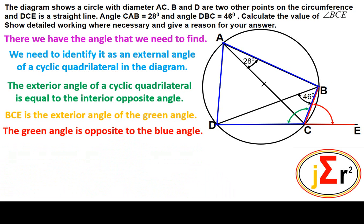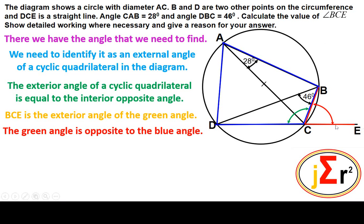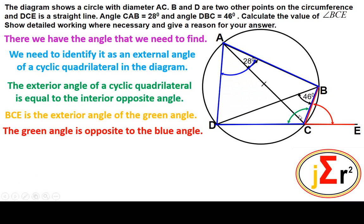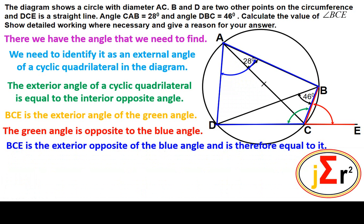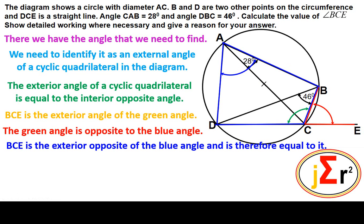We have an objective: to determine angle BCE. BCE is an external angle of the cyclic quadrilateral, and it is external to the green angle. That green angle is opposite to the blue angle. BCE is therefore the exterior opposite of the blue angle and is equal to it — the exterior opposite angle equals the interior angle, which is a property of a cyclic quadrilateral.